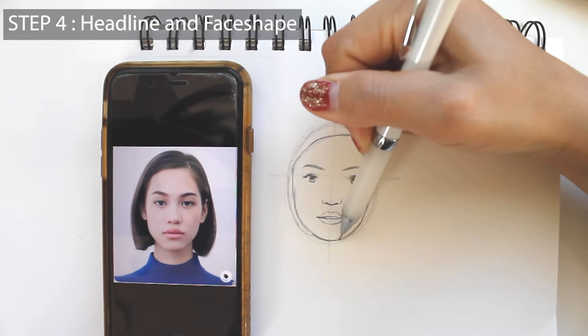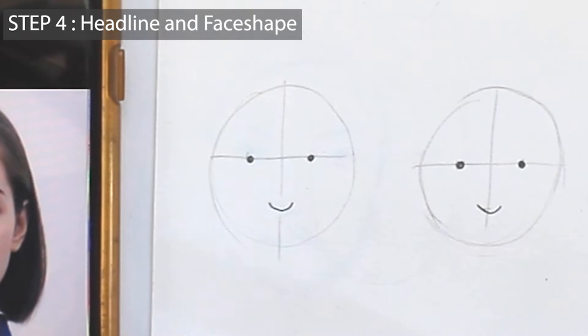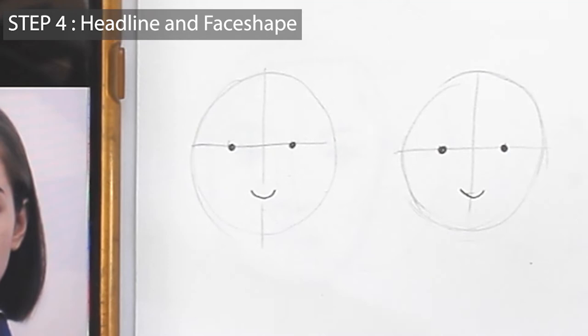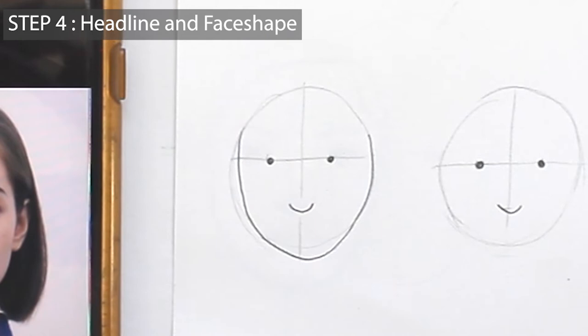The reason I divide drawing the sides of the face into these three steps is because if you draw this in one single stroke, most likely it's going to be very asymmetric. Drawing both sides in parts gives you the opportunity to constantly check if they are somewhat symmetrical.